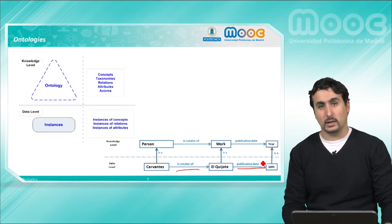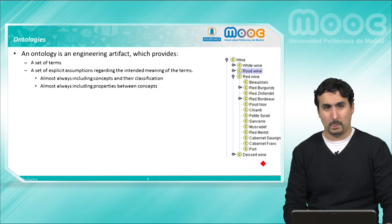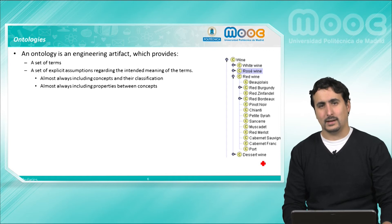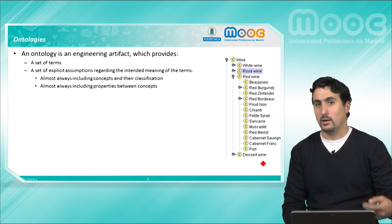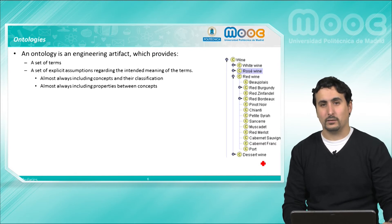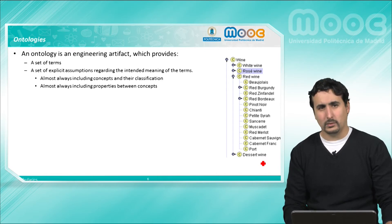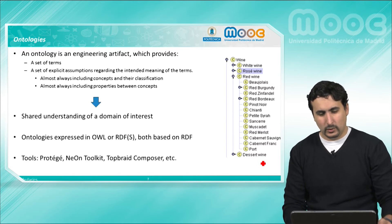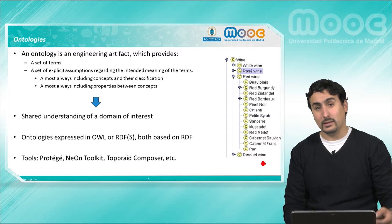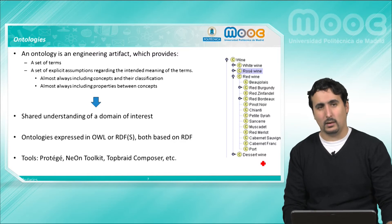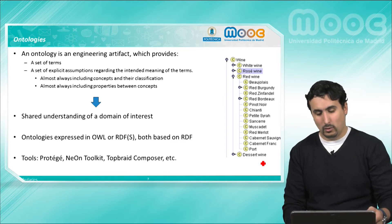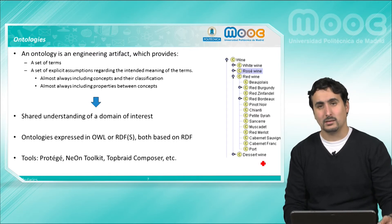We see here the difference between the knowledge level and the data level. We can understand ontologies as an engineering artifact, for which there are several guidelines and methodologies for building them. In general they are composed of a set of terms and assumptions about the meaning of them in the context of the modeled domain. We will have a classification of terms, such as the one we see on the right-hand side of the slide, in which we are talking about different types of wines and how they relate to each other. Ontologies provide a common understanding for a domain and are codified usually using RDF Schema or the Web Ontology Language (OWL), both of which are based on RDF.